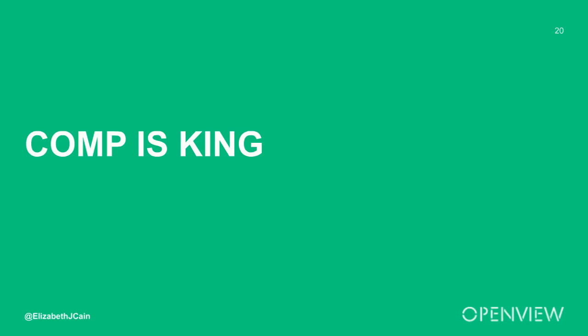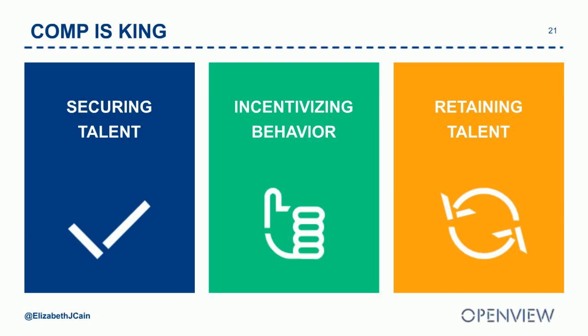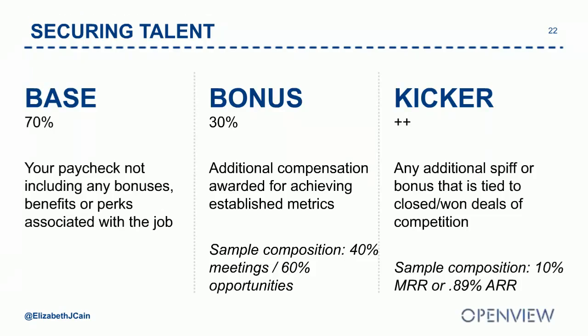The disconnect between BDRs and sales on definitions is constant. The comp plan you structure, how you talk about attainment — it has a really big part in how you secure the right talent. If top talent looks at you and says they're not sure they'll make the money you're claiming, that's a problem. Three key areas: securing talent with the right comp structure, incentivizing the right behavior that aligns between the two teams, and retaining talent through a plan combining compensation and career path.